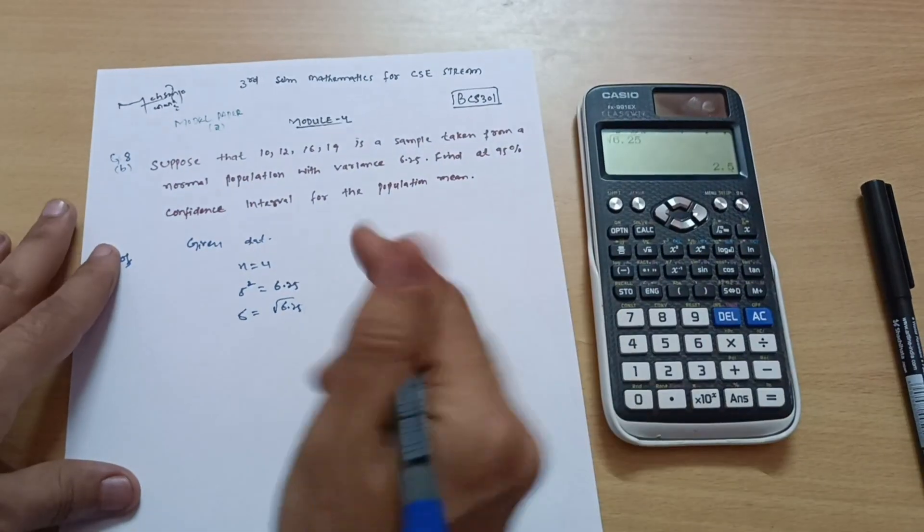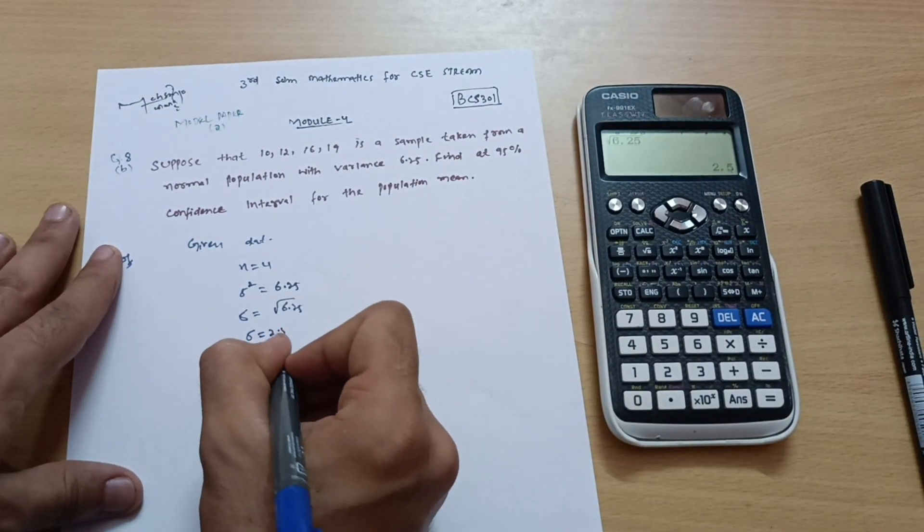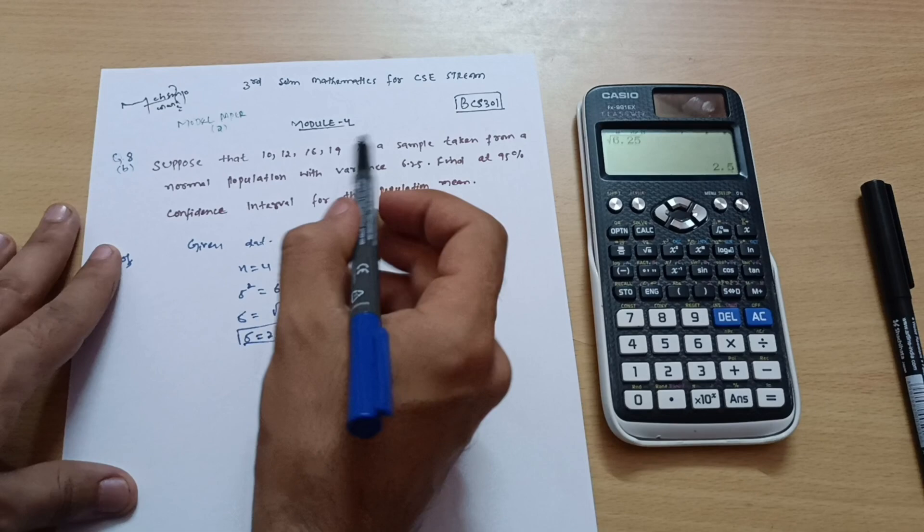So what is the sigma value? Root of 6.25, which is equal to 2.5. So sigma is equal to 2.5.